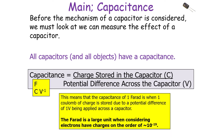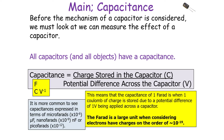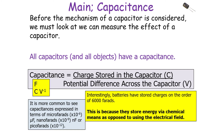The Farad — one Coulomb of charge stored due to a potential difference of one volt — is a very large unit when you consider that electrons have charges on the order of 10 to the minus 19 Coulombs. So it is more common to see capacitances expressed in terms of microfarads, nanofarads, or even picofarads. Interestingly, batteries can store charges on the order of about 6000 Farads because they store their energy via a chemical methodology rather than using the electrical field.